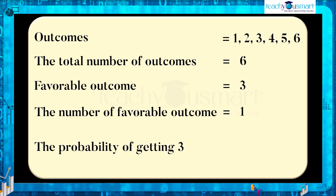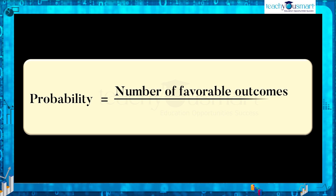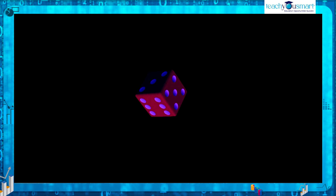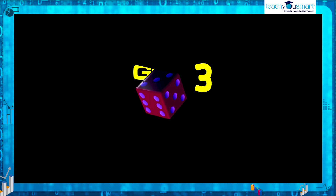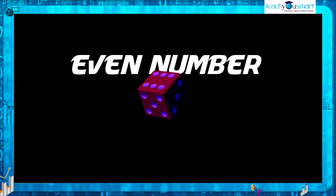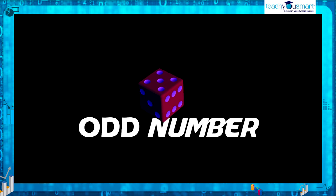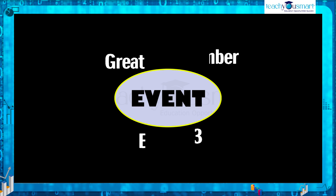Hence, the probability of getting three equals one by six. So we can say that probability equals the number of favorable outcomes divided by the total number of outcomes. Here we get the outcome as three. Similarly, we can obtain the outcomes that are greater than three, lesser than three, even numbers, odd numbers, etc.